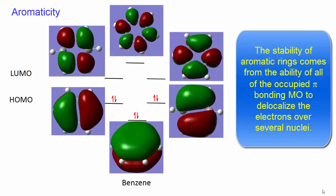The stability of the aromatic rings comes from the ability of all of the occupied pi bonding molecular orbitals to delocalize the electrons over several nuclei.